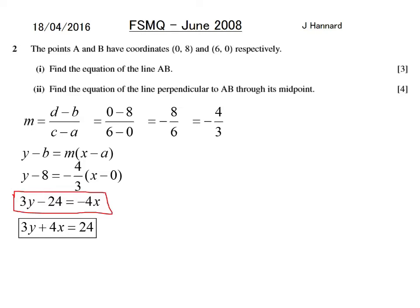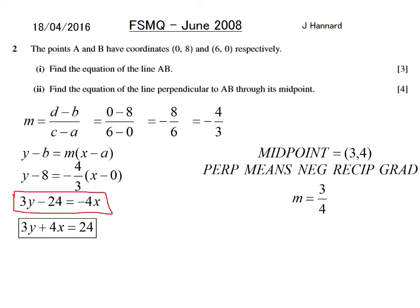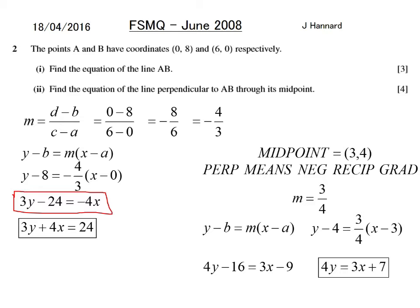Part 2: find the equation of the line perpendicular to AB through its midpoint. The midpoint is (3, 4) — just the average of the x's and the average of the y's. Perpendicularity means the gradients are negative reciprocals, so the new gradient is 3 quarters. Using y minus b equals m(x minus a) with the midpoint, multiply throughout by 4, take the 16 over to join the 9: 4y equals 3x plus 7. Nice easy question if you've learned your geometry equations — 7 marks.